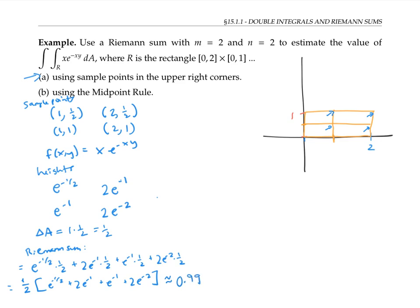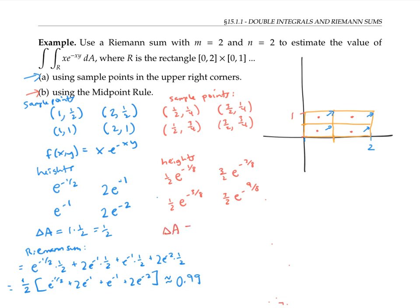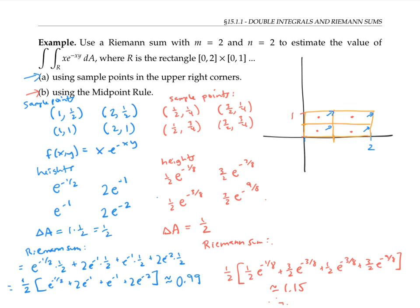We can do the same process using the midpoint rule by using sample points exactly in the middle of each sub-rectangle. The area of the sub-rectangle delta A is still one-half, and this time the Riemann sum works out to about 1.15. We could continue computing Riemann sums using larger numbers of sub-rectangles to get more accurate answers, but there are much easier ways of computing double integrals than using the Riemann sum definition, and we'll see how to do that in the next video.